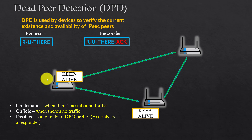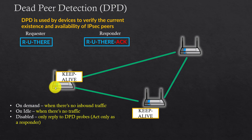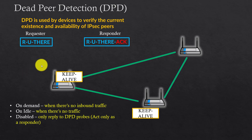Let's take that device as an example. We're going to enable DPD with a feature called on-demand. What it means is: when there is no inbound traffic — basically, if we don't receive any encrypted traffic on the device — only then will we send out a keepalive 'are you there' packet and wait for a response.